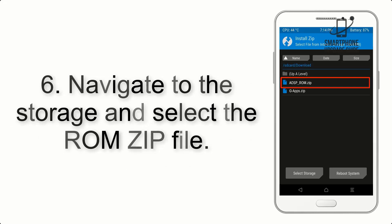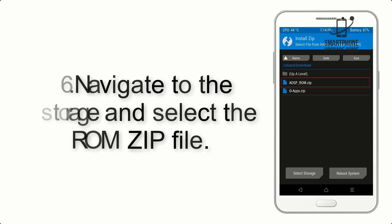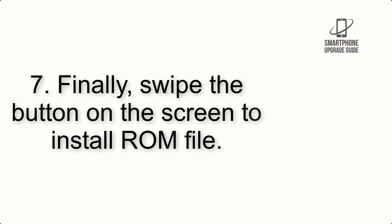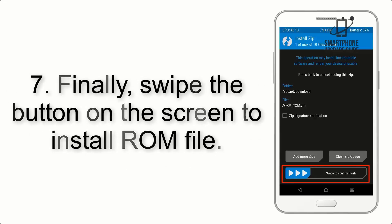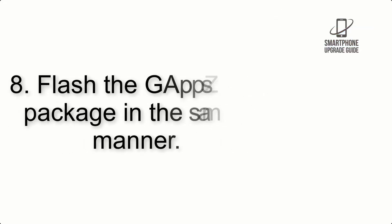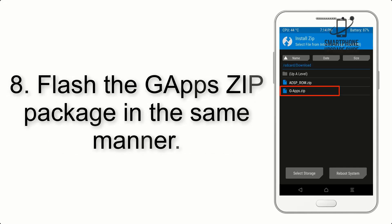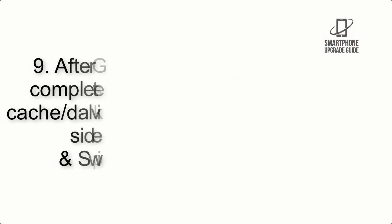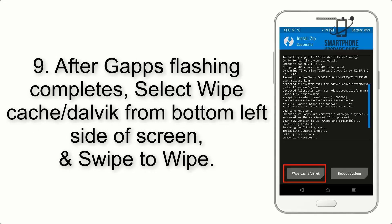Step 6: Navigate to the storage and select the ROM zip file. Step 7: Finally, swipe the button on the screen to install the ROM. Step 8: Flash the GApps zip package in the same manner.